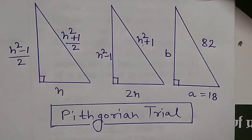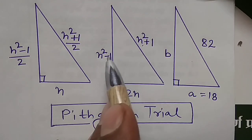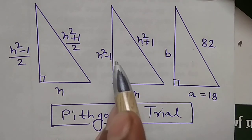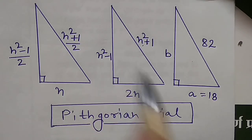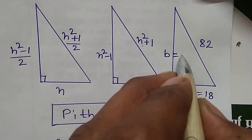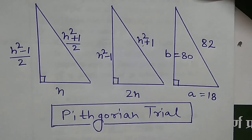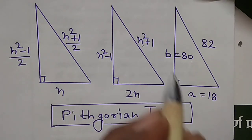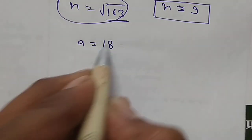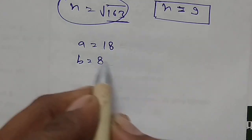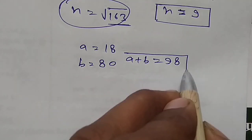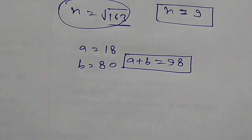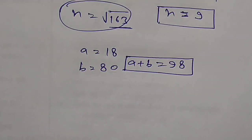And b = n² - 1, with n = 9, so b = 81 - 1 = 80. Therefore, a + b = 18 + 80 = 98 is the right answer. I hope you liked this video — please like, subscribe, and share this video.